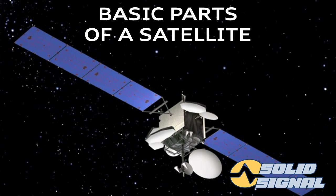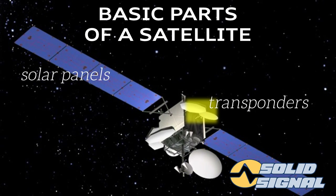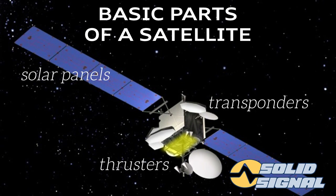This is a typical communications satellite. There are three major parts to it. Solar panels take energy from the Sun and convert it into electricity to run all the electronics. Transponders take the transmissions from the Earth, reprocess them, and send them back down. And finally, thrusters are basically big aerosol cans that help the satellite retain its position.